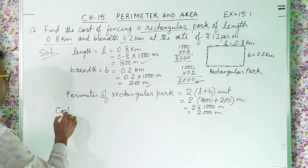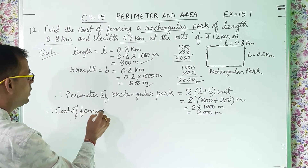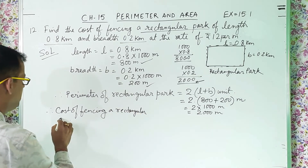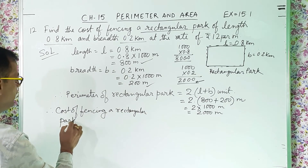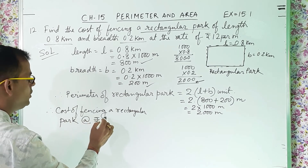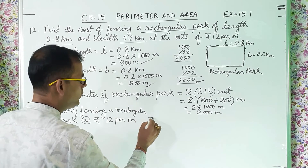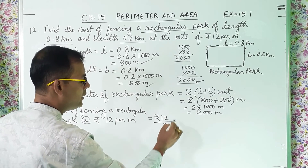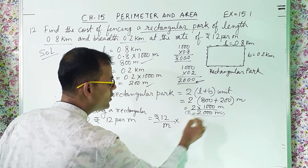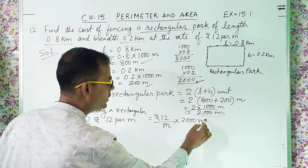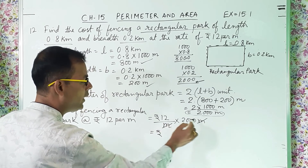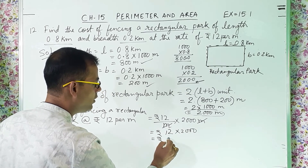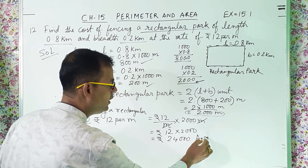Therefore, cost of fencing a rectangular park at the rate of rupees 12 per meter equals rupees 12 per meter into the perimeter of 2000 meters. Meter and meter cancel, so we get 12 into 2000, which equals rupees 24,000. That is the answer.